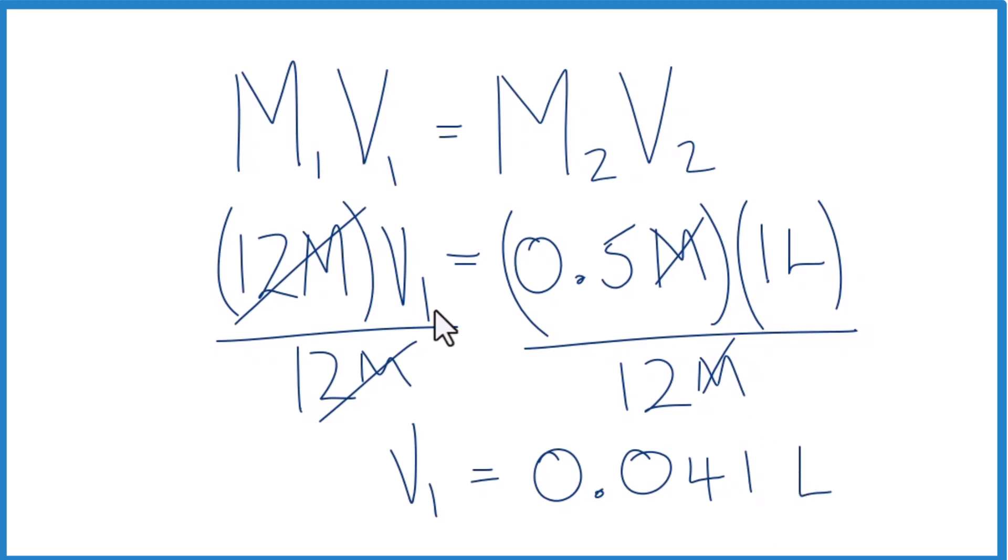One final way you could do this is instead of 12 molar, maybe you had a stock solution of, say, 3 molar. So you could put your 3 molar in here, figure out your V1, and make your solution based on a stock solution that you maybe already made earlier.